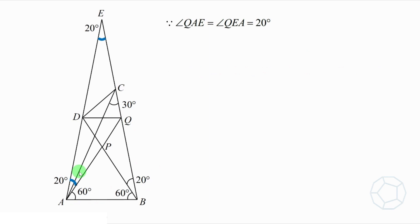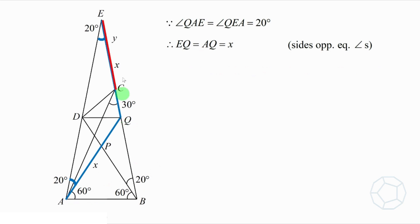On the other hand, because angle QAE and angle QEA are 20 degrees, therefore, EQ and AQ are both X, and the reason is sides opposite equal angles. As we have proved that the red side EC is equal to Y, therefore, the green side CQ is X minus Y, which is also equal to DQ.